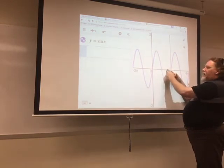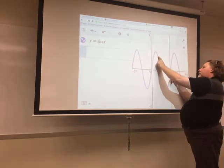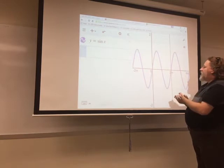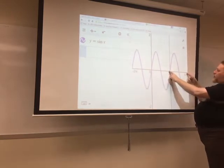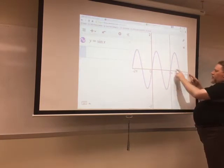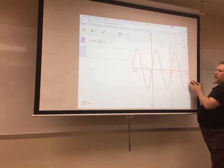Zero to 2 pi is how long it takes me to get from the origin going upward, back down, and then back to where we started, 2 pi. And you'll notice, if I went another 2 pi to 4 pi, I would have another period. So I would go up to 1, back to 0, back down to negative 1, and back to 0.